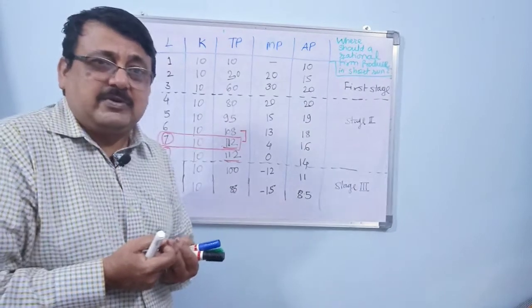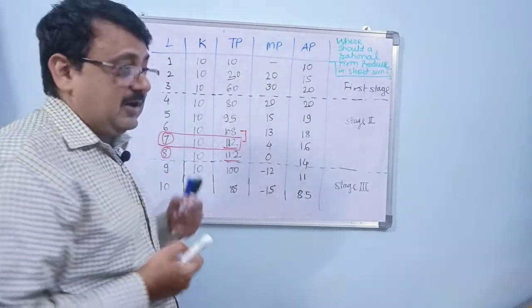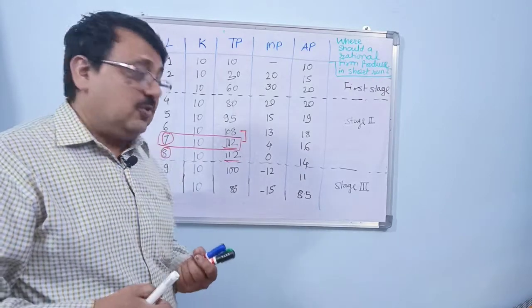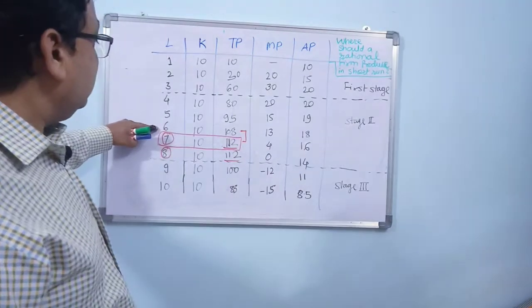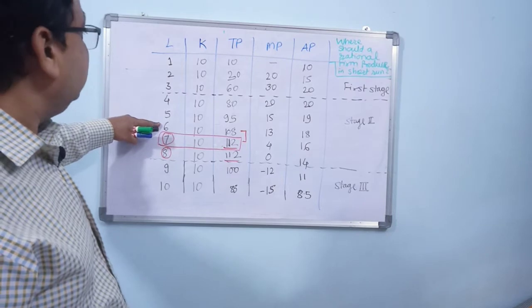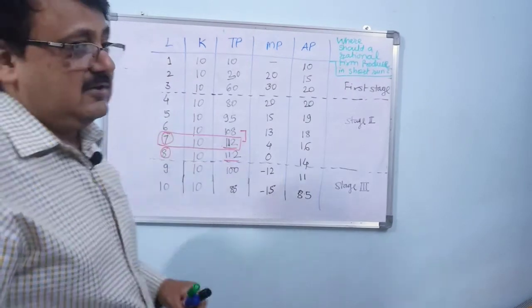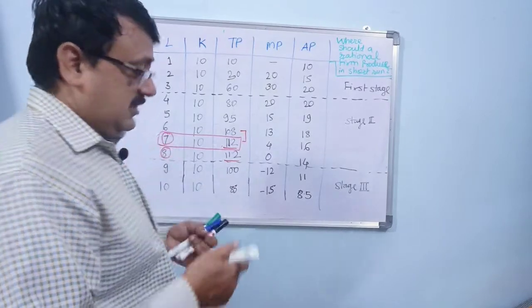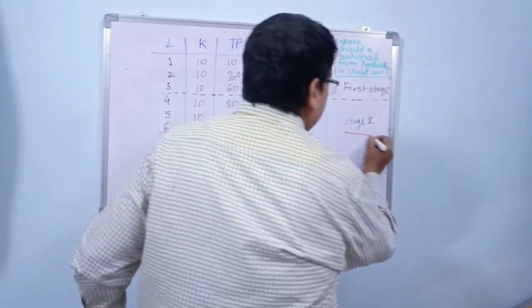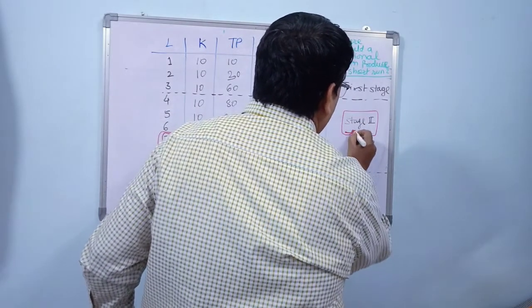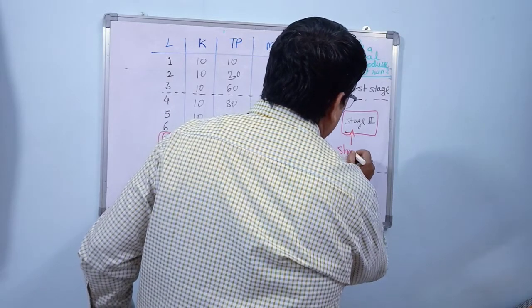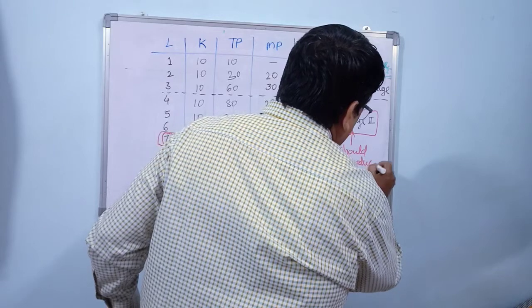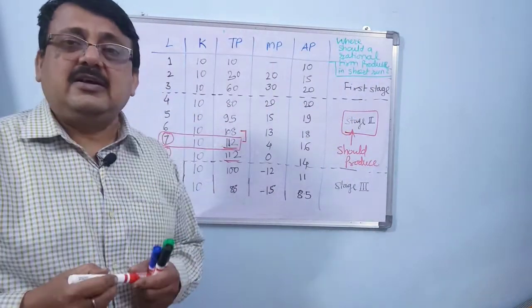So it is better to have six labor and 108 production. It all depends on the labor rate, but obviously stage two is the place where a rational firm should produce.